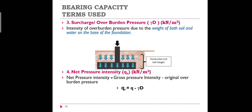Gross pressure is represented by the letter Q, because it is the total pressure. Net pressure is represented by the letter Q_N. So Q_N is equal to Q minus γD, where γD is the overburden pressure or surcharge.